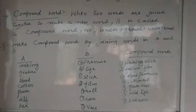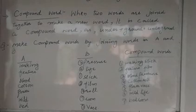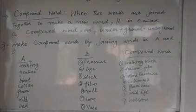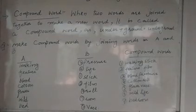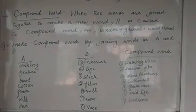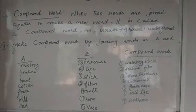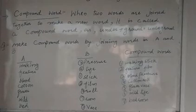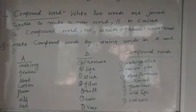Column A का next word है bed. तो इसका suitable word है room. तो जो हमारा compound word बना, वो है bedroom. I repeat — जो हमने compound words column A को column B के साथ जोड़ के हासल किये, वो ये हैं: walking stick, feature film, blood pressure, cotton roll, flower vase, wildlife, और bedroom.